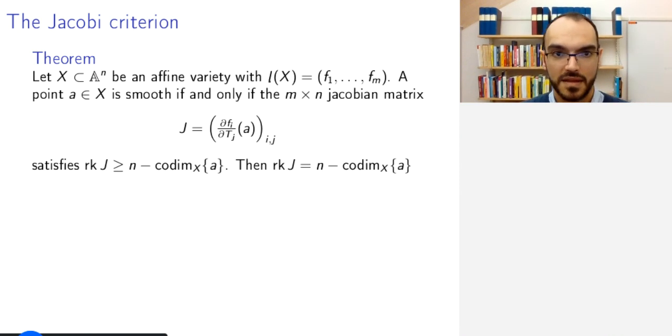And so if we have an affine variety embedded into A^N, and let's say that the vanishing ideal of this variety is generated by F_1 to F_m, then a point is smooth if and only if this Jacobian matrix of the partial derivatives at a has a big enough rank. Namely, the rank is at least N, the dimension of the ambient space, minus the co-dimension of a in X. And in fact, if this holds, then the rank is equal to this number.